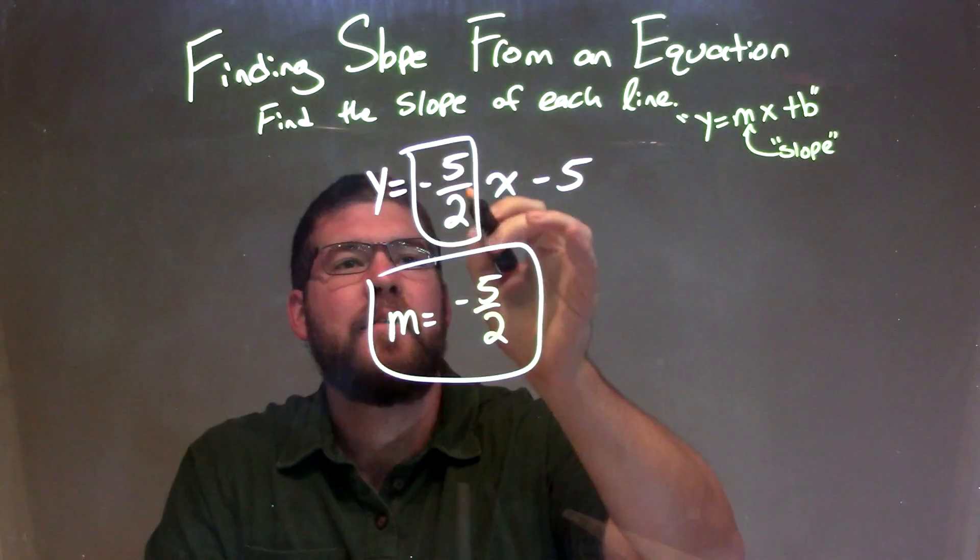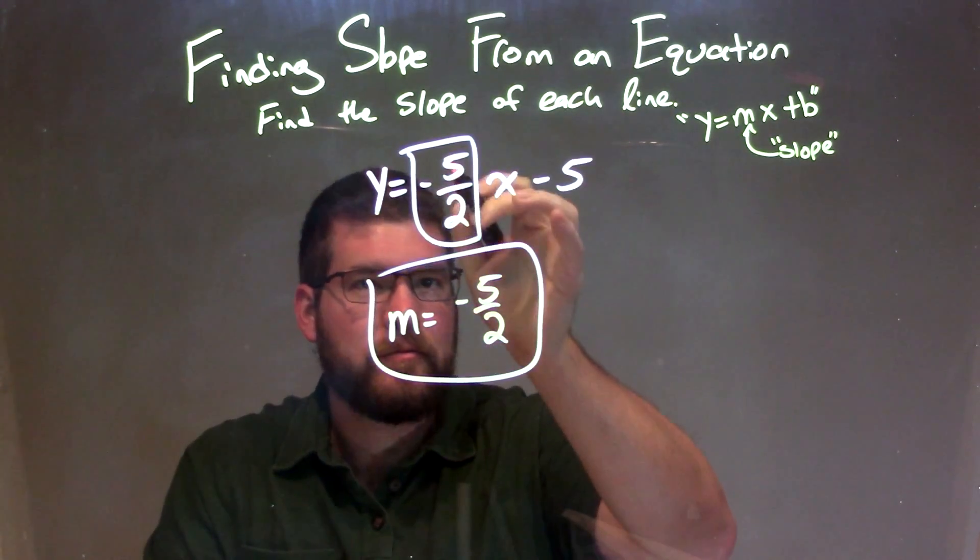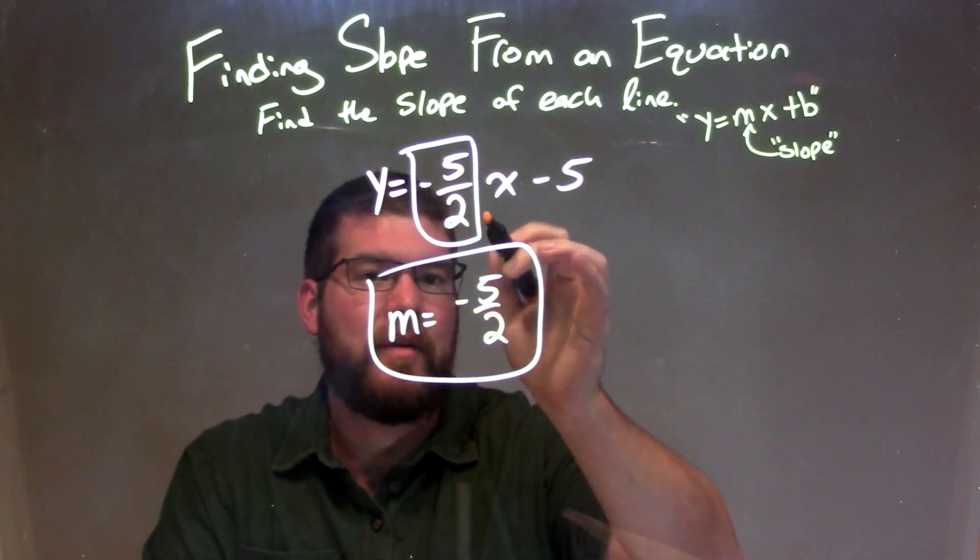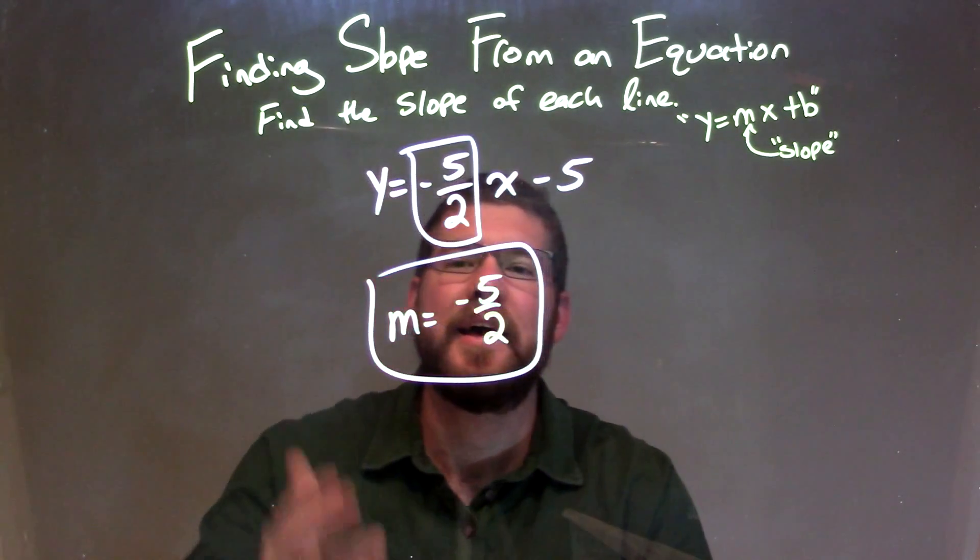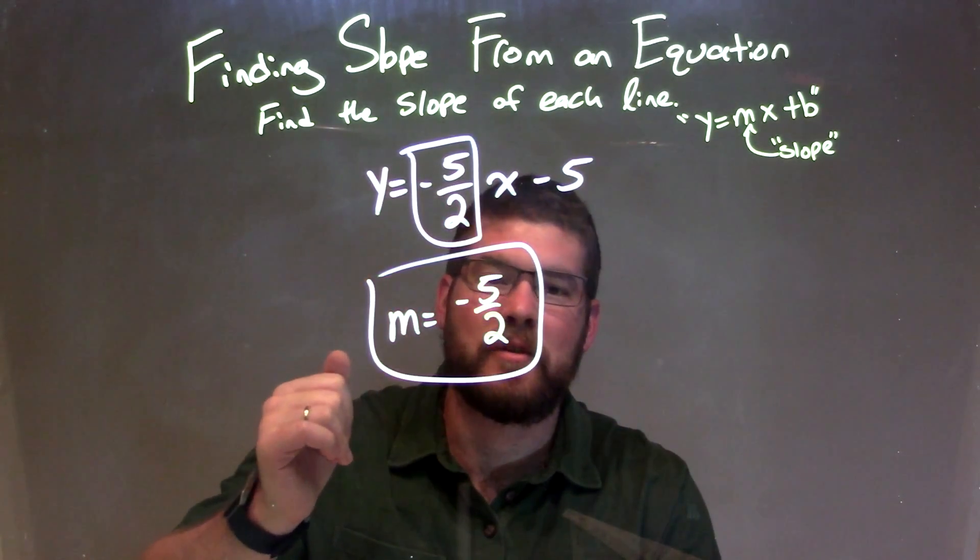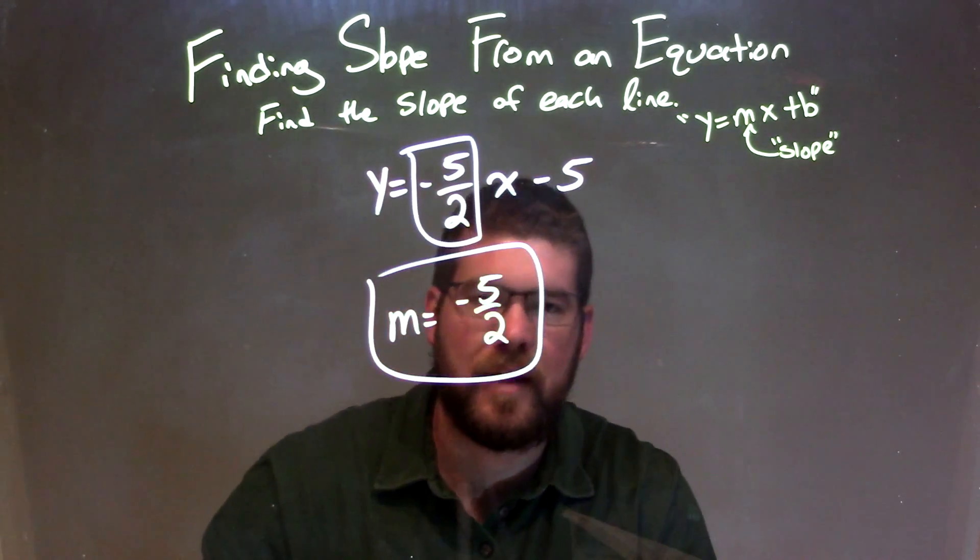and so we're given our slope right there. So we've identified the coefficient in front of x, right here by itself, and now we have our slope, which is our final answer, m equals negative 5 halves.